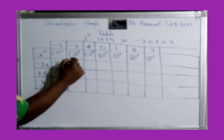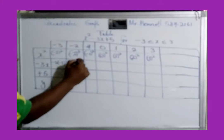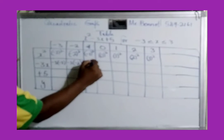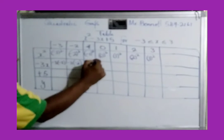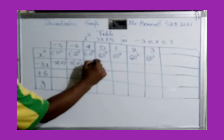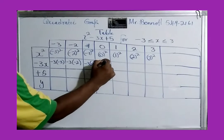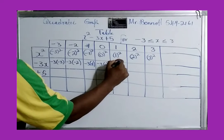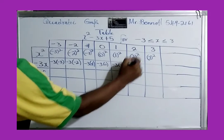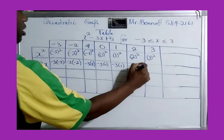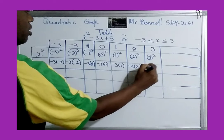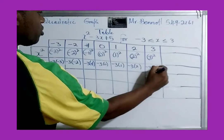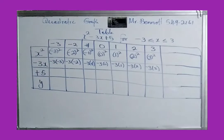Next we go down to negative 3x. So x is negative 3 in the first column, and we go: negative 3 times negative 3, negative 3 times negative 2, see the pattern — negative 3 times negative 1, negative 3 times 0, negative 3 times positive 1, negative 3 times 2, negative 3 times 3.